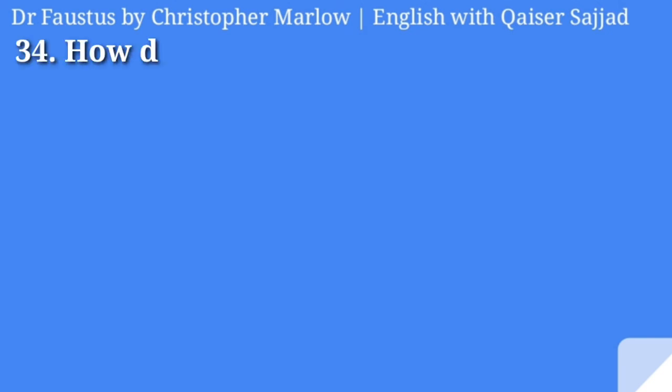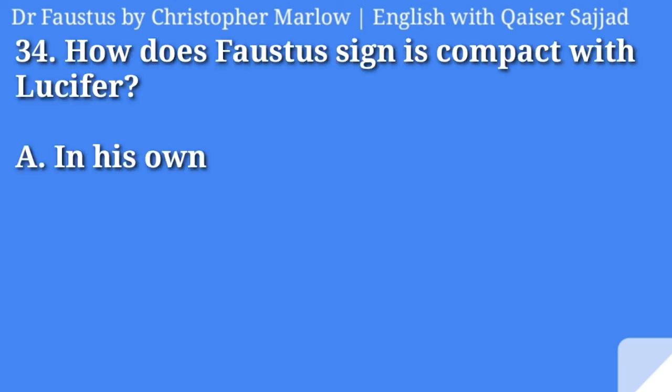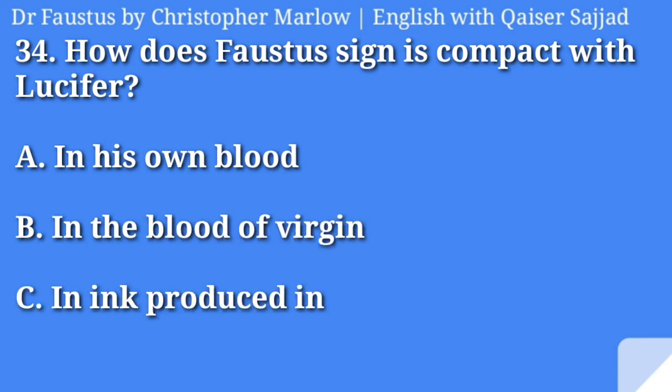How does Faustus sign his compact with Lucifer? In his own blood, in the blood of a virgin, in ink produced in hell, or he doesn't? Answer is option A, in his own blood.